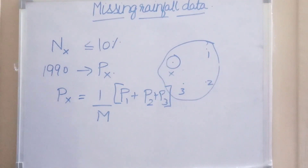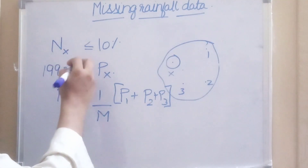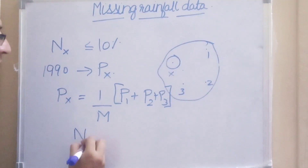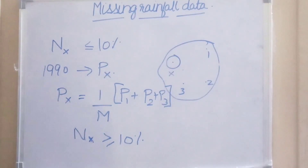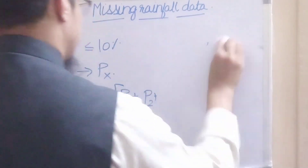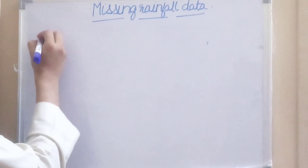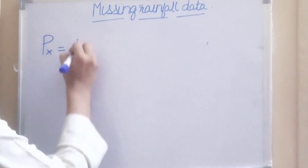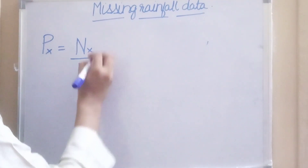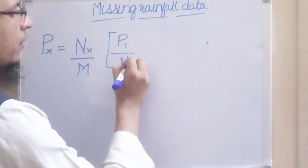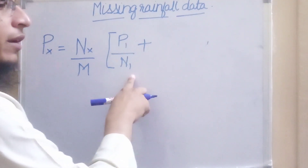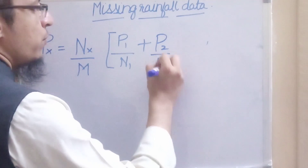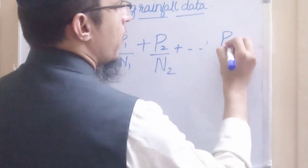If the difference in the normal annual rainfall is greater than 10 percent, then the simple average method will not be suitable and we have to use the normal ratio method. In that case the formula used to find the missing rainfall data will be: Px = (Nx / m) × (P1/N1 + P2/N2 + ... + Pm/Nm), where Nx is the normal rainfall at station X and N1, N2, ... Nm are the normal rainfalls of the neighboring stations.